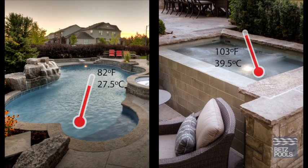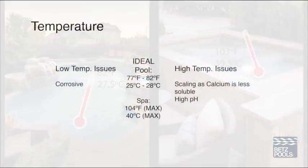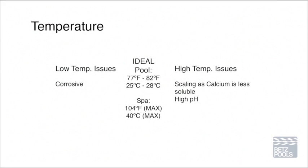The next two factors in water balance are temperature and total dissolved solids. Both are a factor with pools but are a much larger factor in the balance of spas due to higher temperatures and smaller bodies of water. High temperatures in pools can help increase the pH level and may increase scaling, as calcium is less soluble at higher temperatures. These factors also apply to spas, but you will also have increased evaporation, increased chemical reactivity, and accelerated secretion of body waste, which will be a larger factor in balancing and sanitizing your spa. These factors happen much quicker in spas and need to be addressed more often than pools.